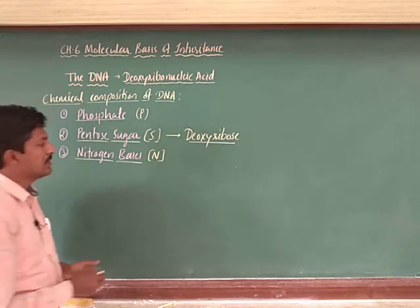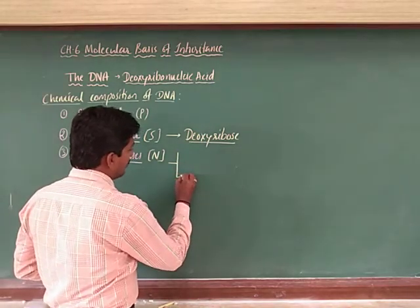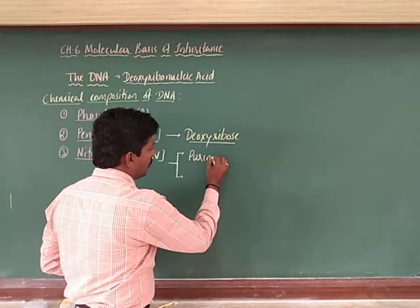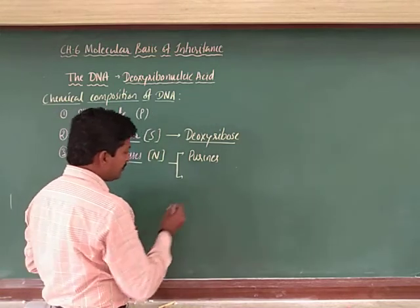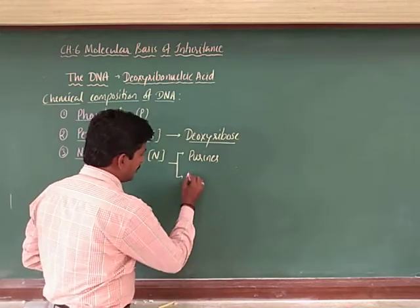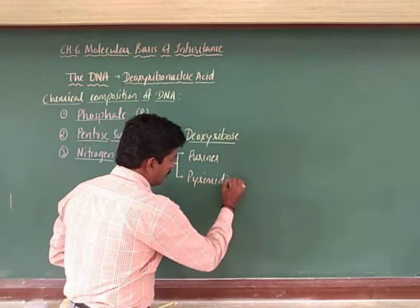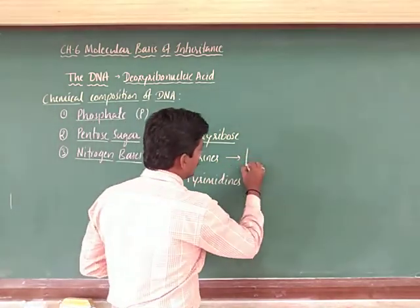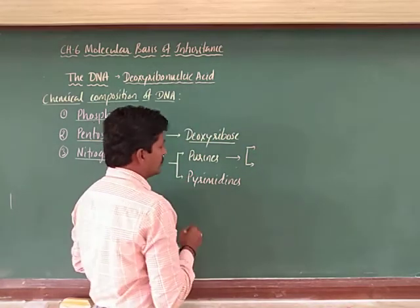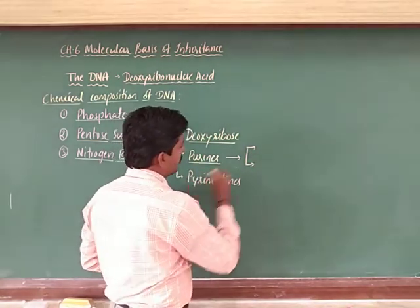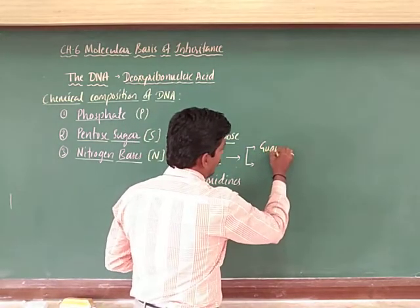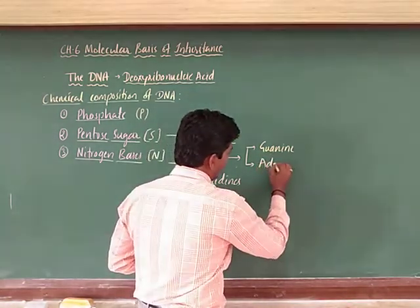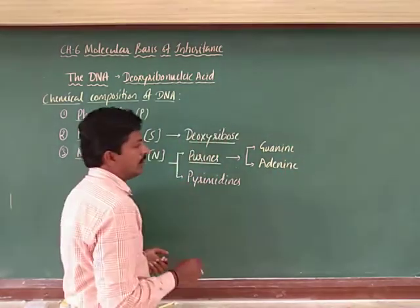Next, the nitrogen bases. There are two kinds: purines and pyrimidines. Purines are double-ringed structures, and there are two of them: adenine and guanine. Adenine is indicated by A and guanine by G.